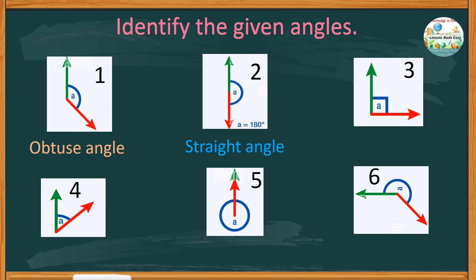Figure 3 is obviously a right angle, which is exactly 90 degrees. Figure 4: this angle is less than 90 degrees, so this is an acute angle.